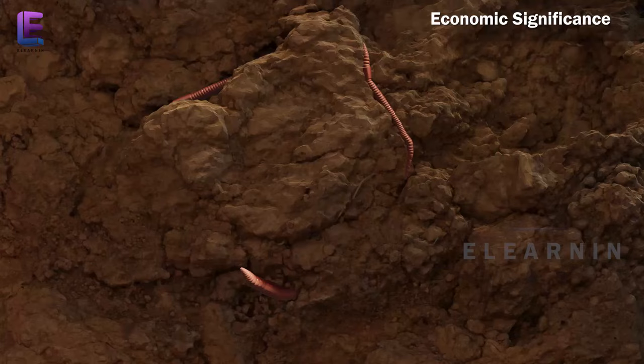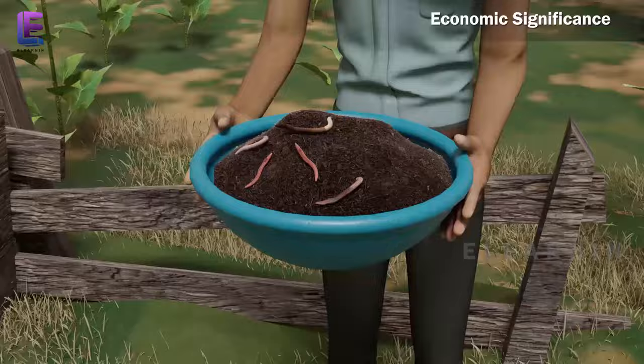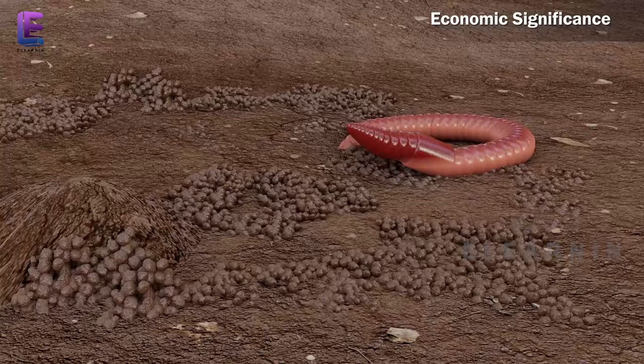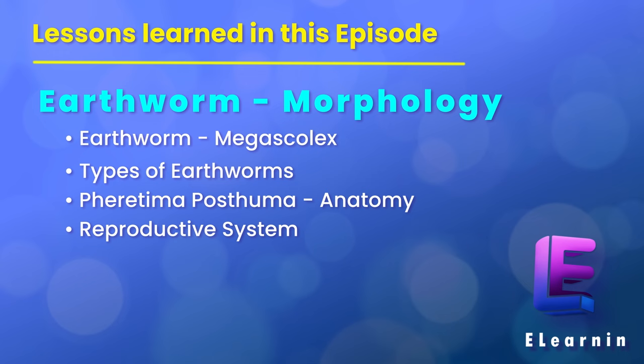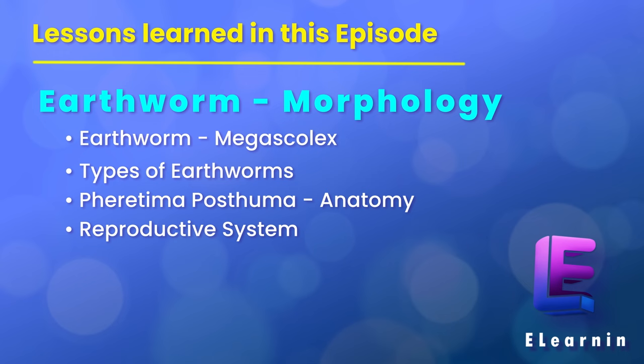Economic significance: Earthworms are known as friends of farmers because they make burrows in the soil and make it porous, which helps in respiration. The process of increasing fertility of soil by earthworms is called vermicomposting. Their excreta fertilizes the soil. They are also used as bait in game fishing.